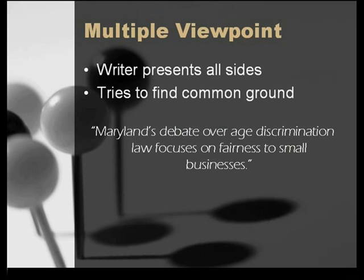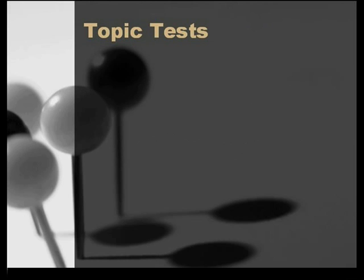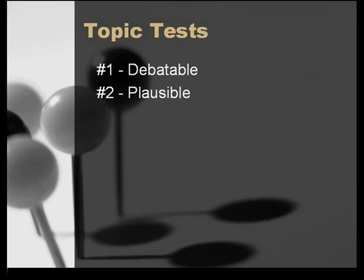Clearly, the writer will present both sides of this debate. Now, once you've chosen the kind of topic you will examine and the kind of paper you will write — single or multiple viewpoint — it's time to brainstorm a list of topics. As you begin sorting out these very preliminary ideas, try applying these three tests. A valid, workable topic will pass all three tests, making it debatable, plausible, and consequential.